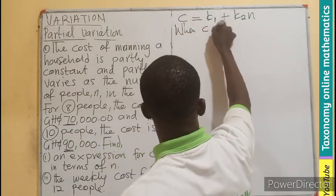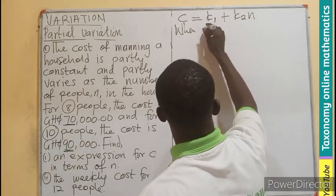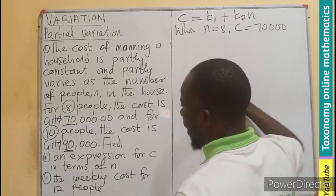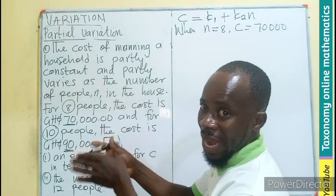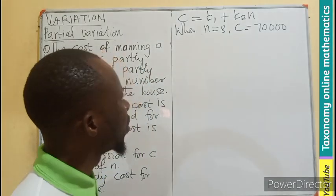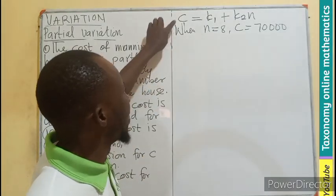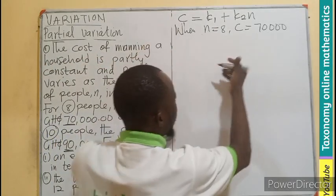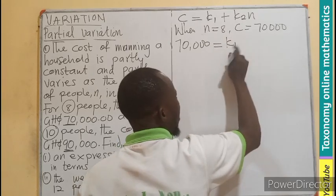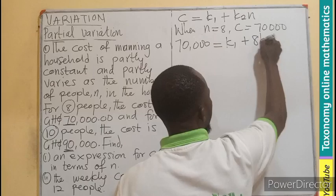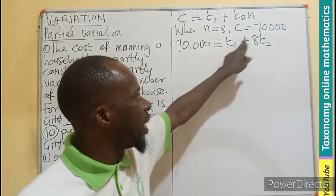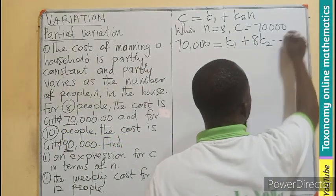When n is 8, C is 70,000. I'll leave the currency aside so we can deal with the numbers. When we're done we'll introduce the unit. We're going to do substitution, so wherever I see C I introduce this. So I'm having 70,000 equals k1 plus k2 times 8, meaning 8k2. We can't do anything because k1 and k2 are unknown. So we have our first equation.